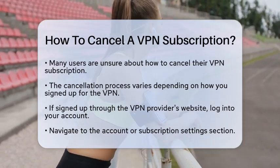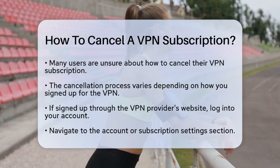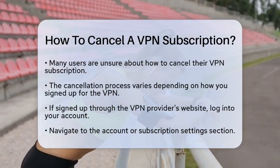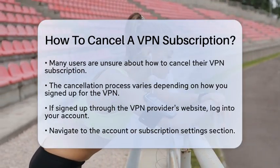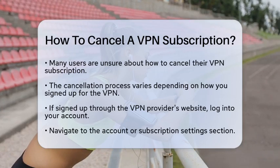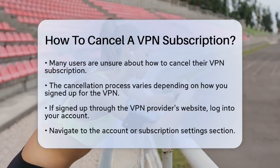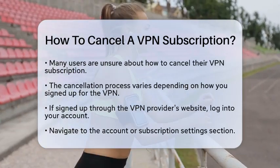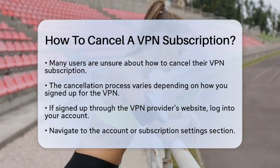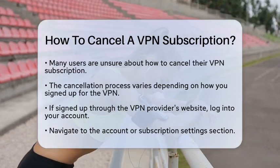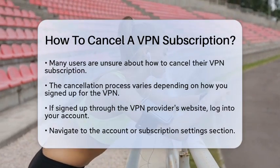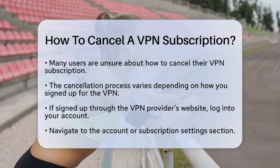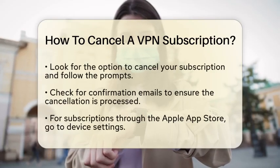If you signed up directly through the VPN provider's website, the first thing you need to do is log into your account. Head over to the official website of your VPN provider and enter your login credentials. Once you are in, look for a section that deals with your account or subscription settings. This is usually found in a menu or under your profile settings.